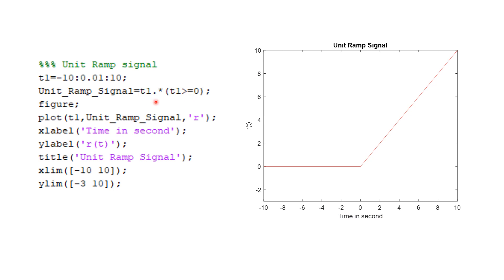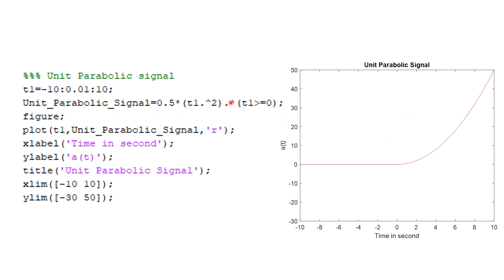For the parabolic signal, it should be one-half t squared times u(t). The code is: 0.5 .* (t1.^2) .* (t1 >= 0). Here t1.^2 is the notation for element-wise squaring of the vector, and dot-star is used for element-wise multiplication with the unit step logical array. The rest of the plot commands are the same.